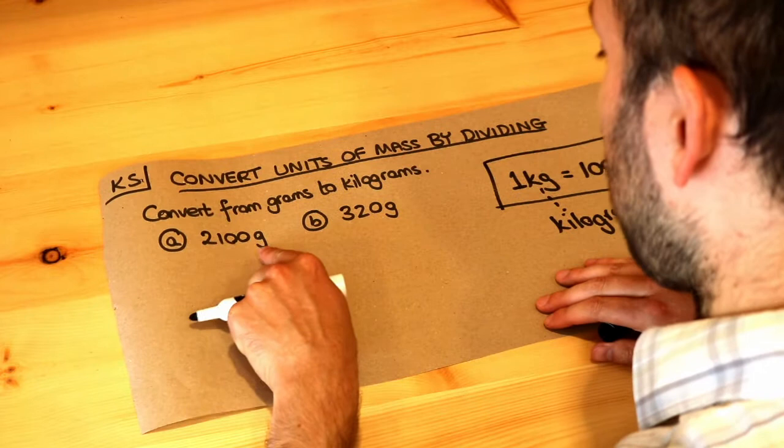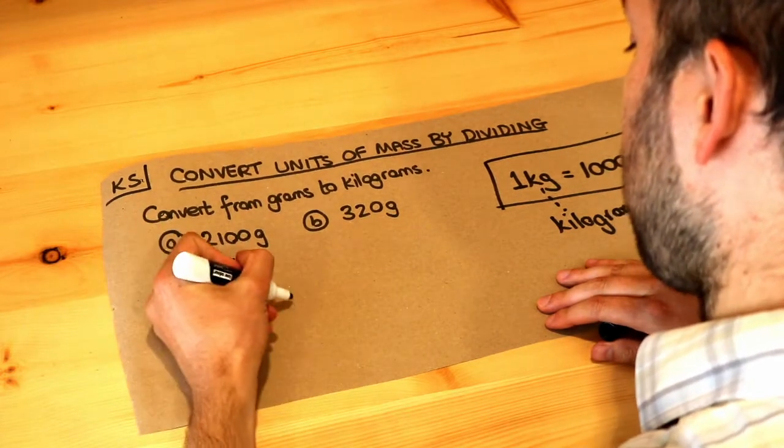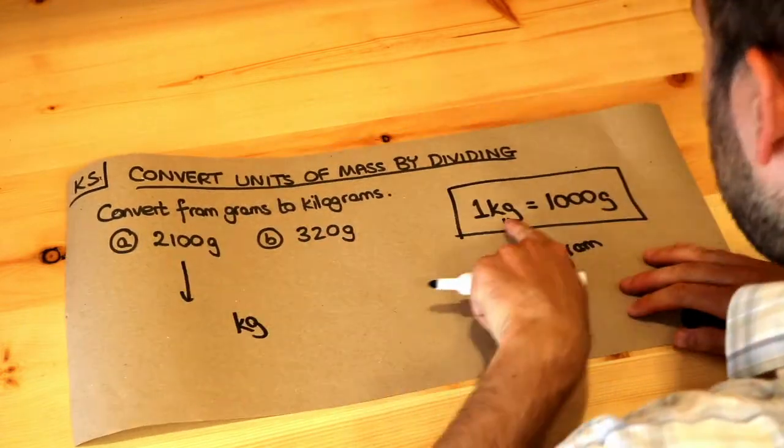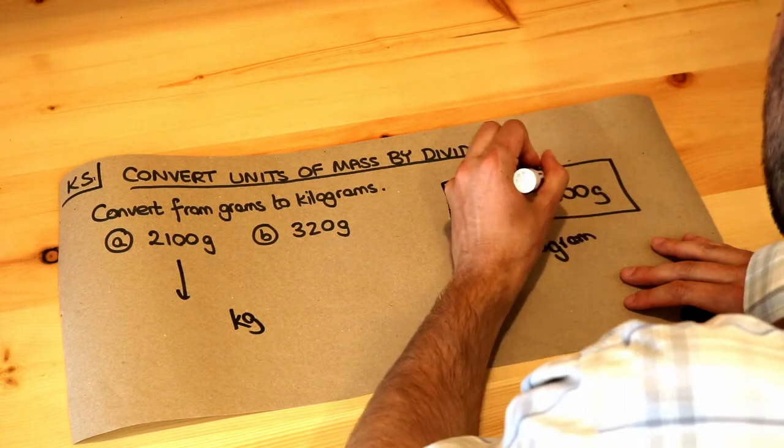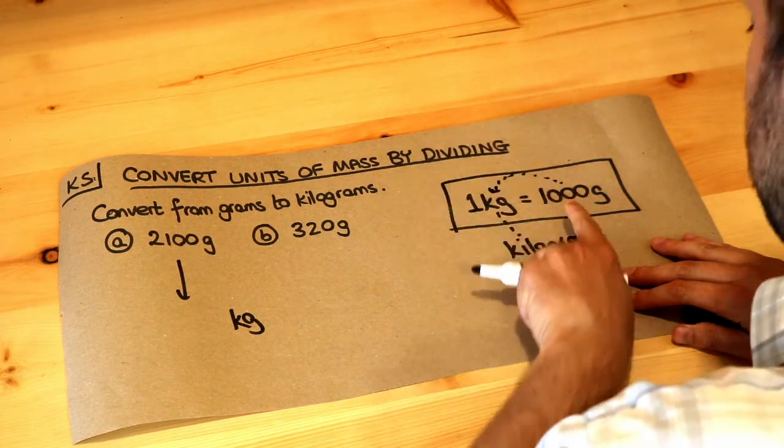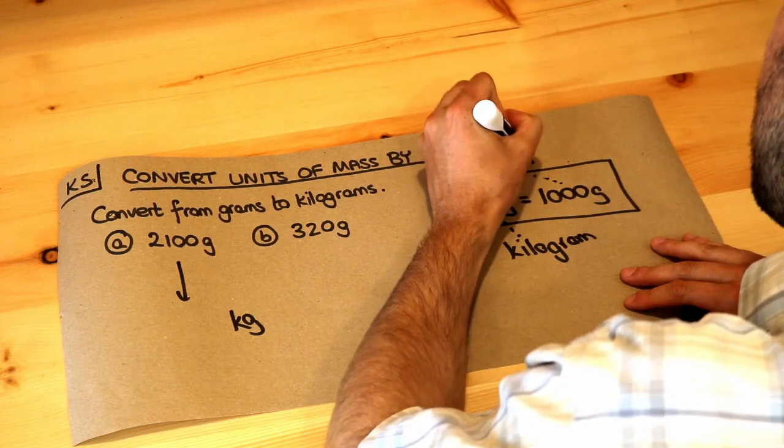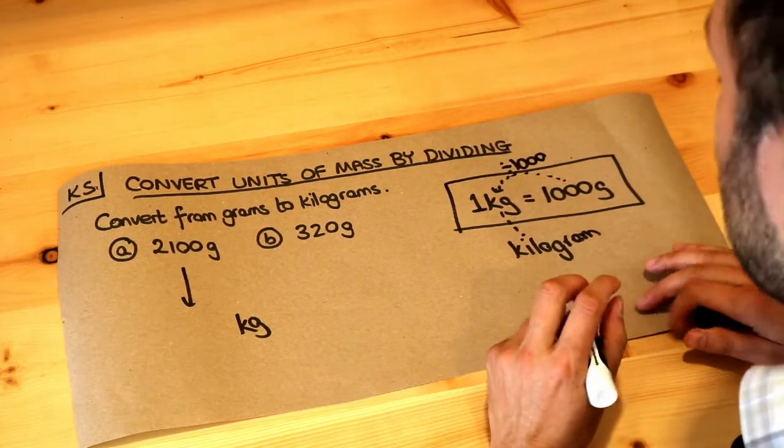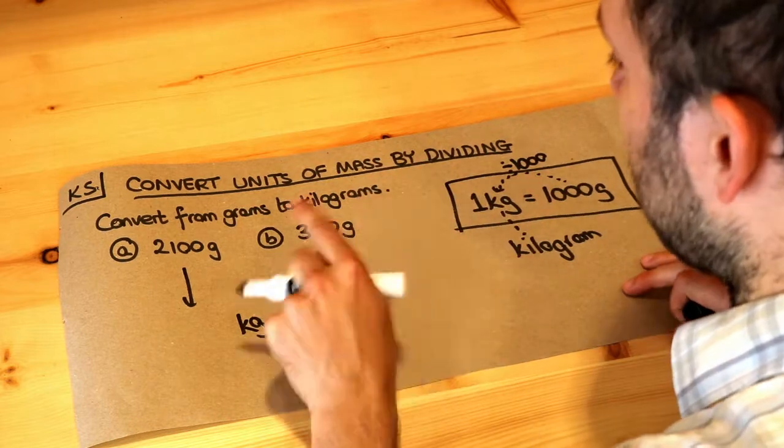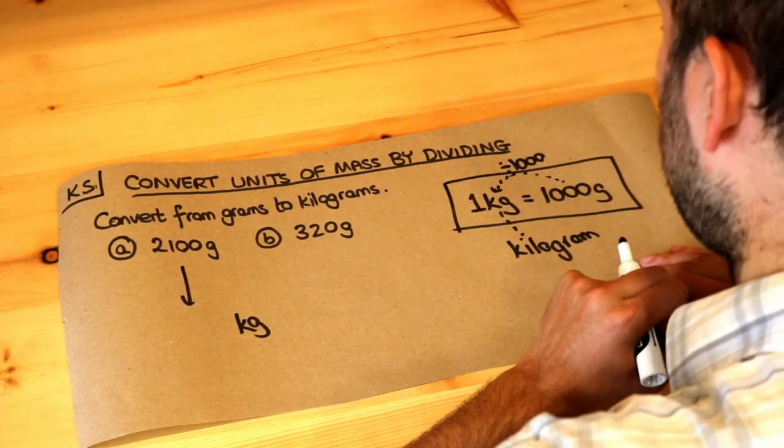Now we want to go from grams into kilograms. Let's look at this conversion from grams to kilograms. Can you see the numbers getting smaller? More specifically, it's getting a thousand times smaller. So always check whether we want a smaller or bigger number as our answer.